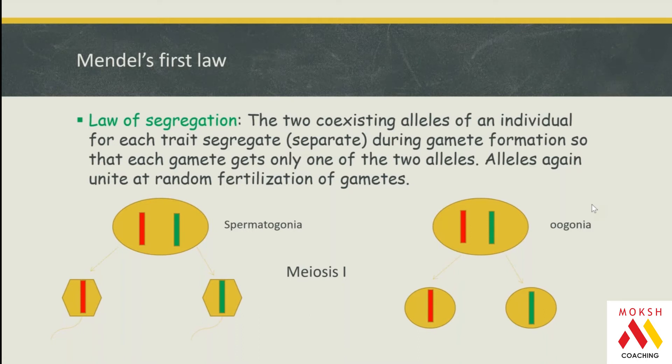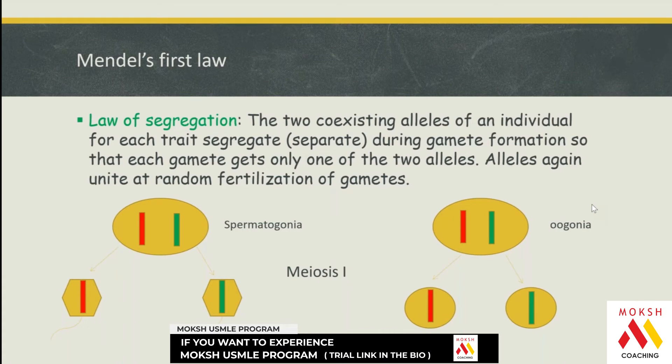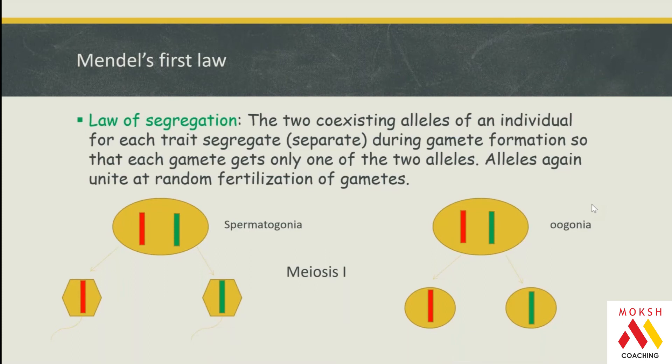When spermatogonia divides in meiosis I, you see the separation of homologous chromosomes after crossing over. That means there's segregation of common loci or alleles of common loci. The two coexisting alleles of an individual for each trait segregate during gamete formation so that each gamete gets only one of the two alleles.